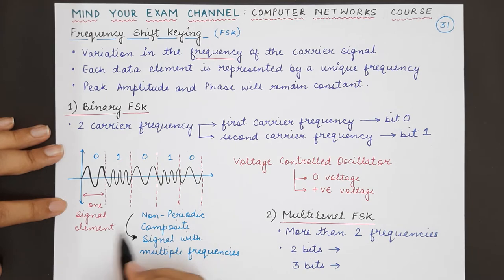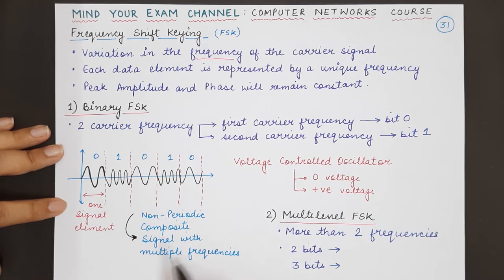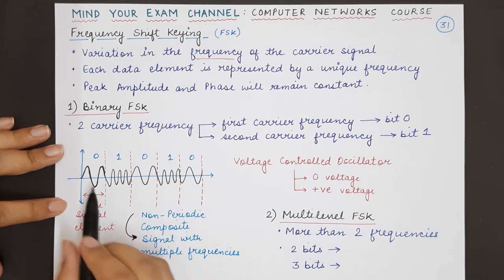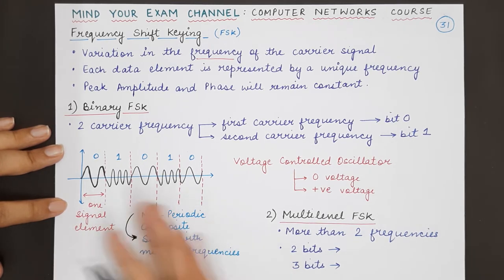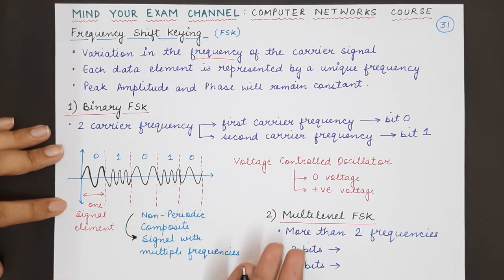There is no pattern being followed and it is a composite signal because composite means more than one. It contains more than one frequency, so the composite signal has multiple frequencies.